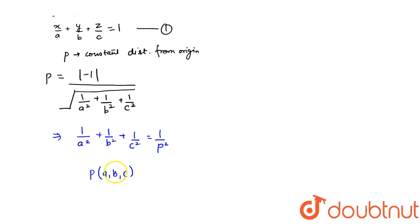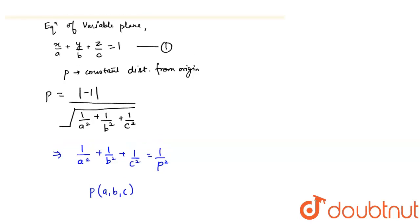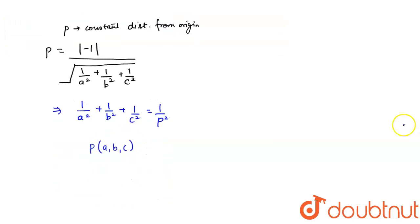To obtain the locus of p, replace a, b, c by x, y, z, correct? So, just replace a, b, c by x, y, z.